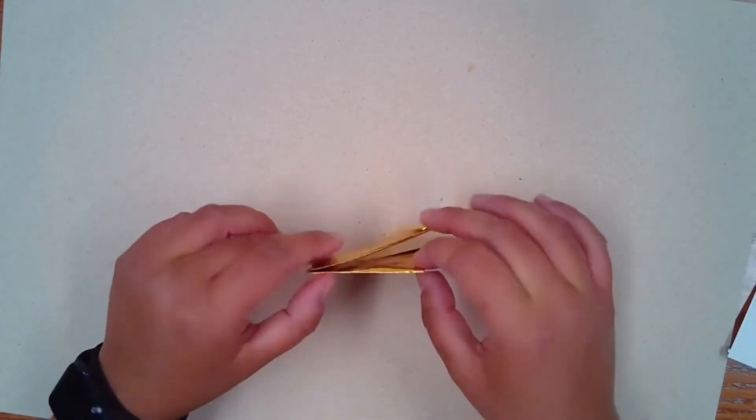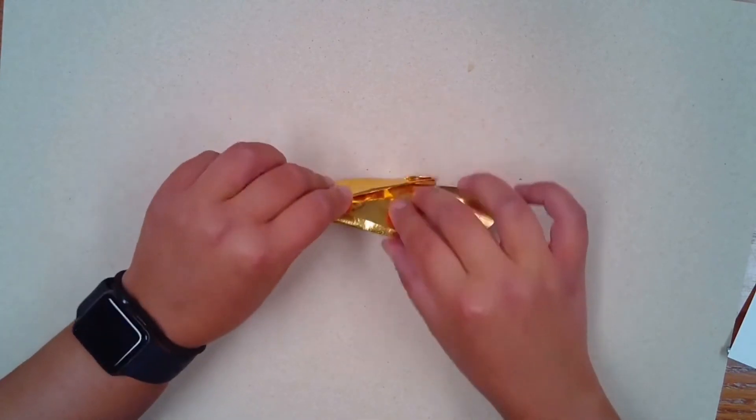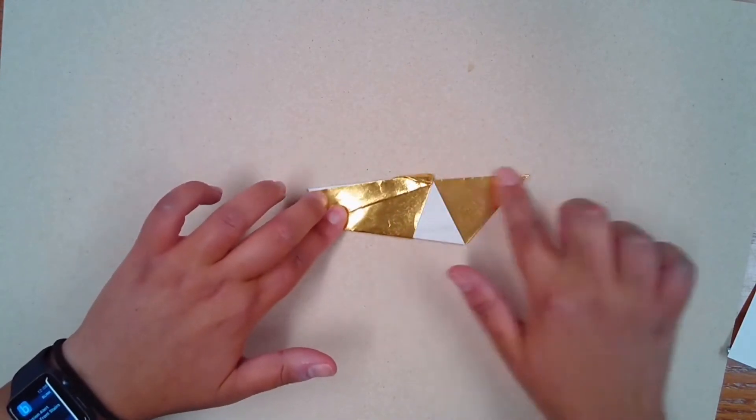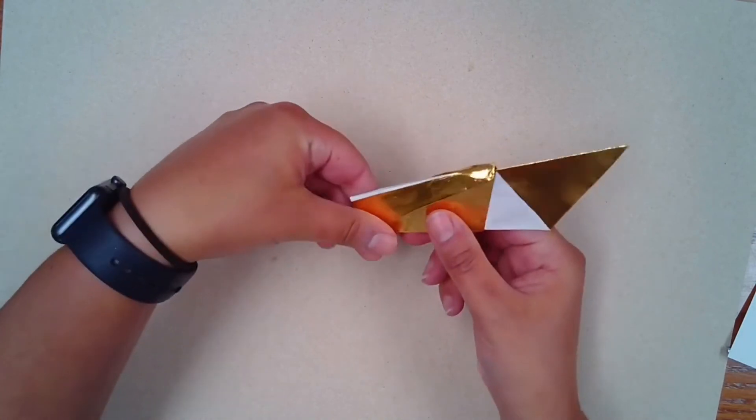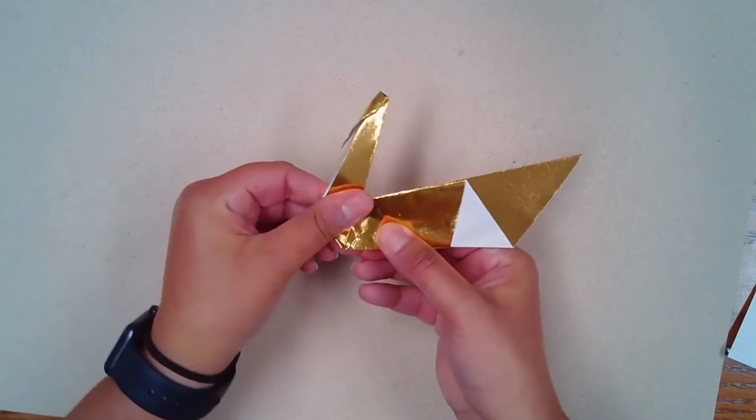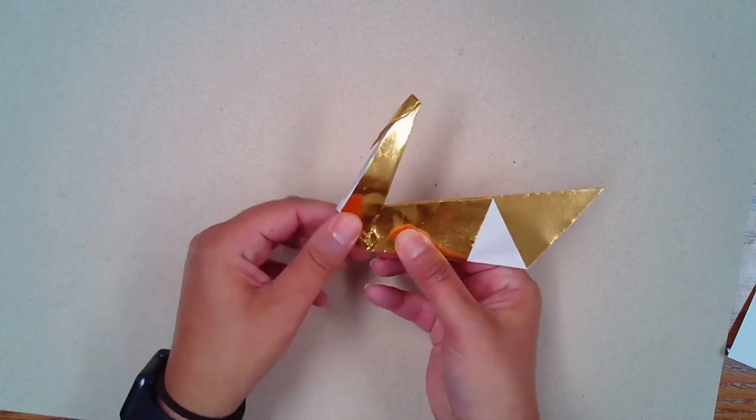From here, take the entire thing and once again fold it in half along that center line. And then from here, you're just going to pull the neck up and kind of re-crease where that was folded.